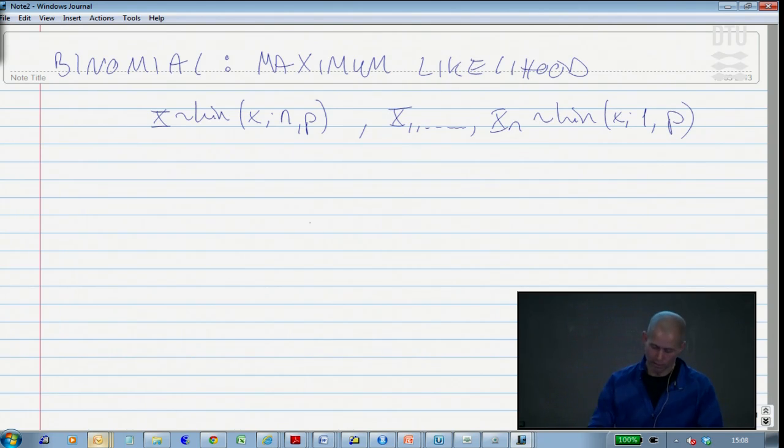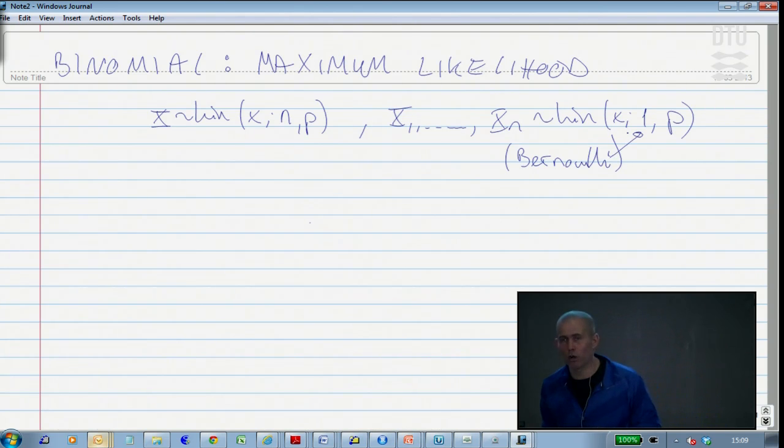Usually, in probability theory, these are called Bernoulli variables. When the binomial n is 1, it's called a Bernoulli variable. It's still a binomial, a specific kind of binomial.